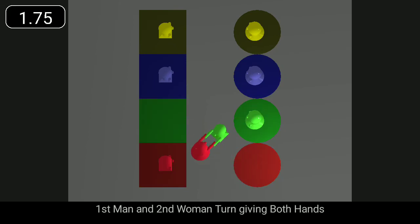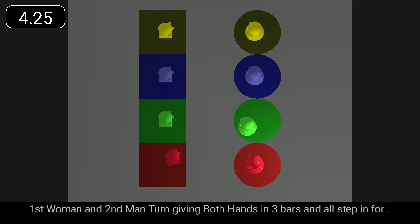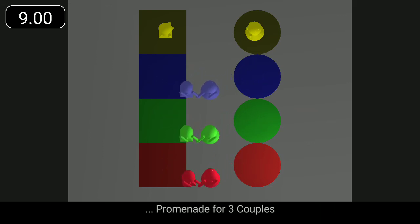First man and second woman turn giving both hands. First woman and second man turn giving both hands in three bars and all step in for promenade for three couples.